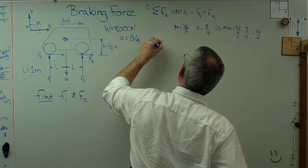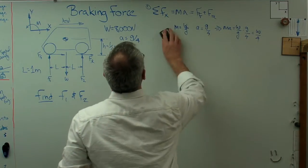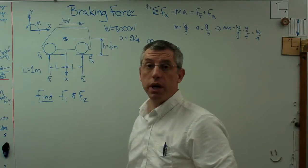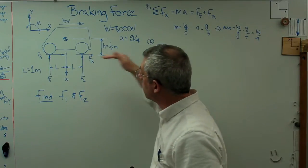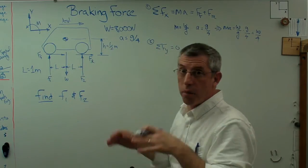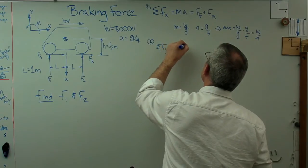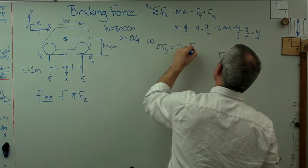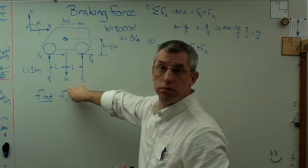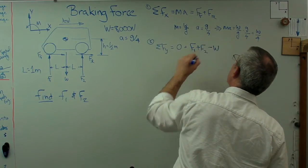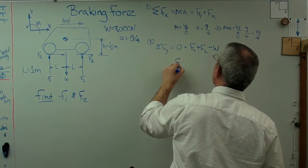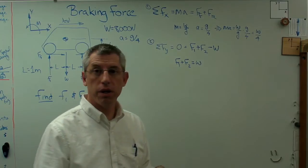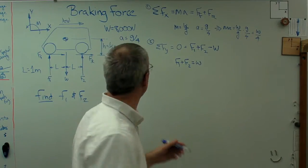Equation number two: sum of the forces in the y direction. These equal zero because there's no acceleration in the vertical direction — the car's motion is strictly horizontal. The vertical forces upward are F1 plus F2, and the force downward is W, the weight of the vehicle. Rearranging, F1 plus F2 equals W. That simply means the total normal force on the road must equal the weight of the car, which is intuitive.